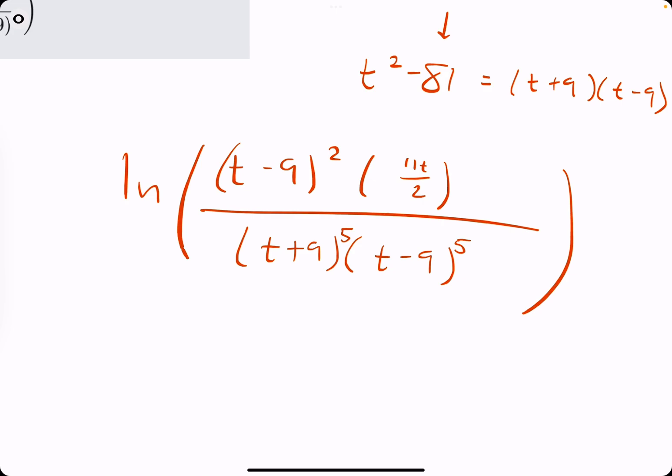how can we simplify? If we see (t - 9)² on top and (t - 9)^5 on the bottom, we can cancel out as many as we can. Get rid of the 2 on top. Get rid of 2 from the bottom, leaving us with 3 of them on the bottom. If we had 5 of them on the bottom, we get rid of 2, we're left with 3.